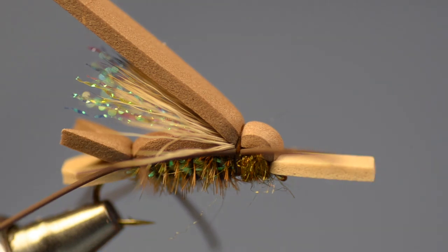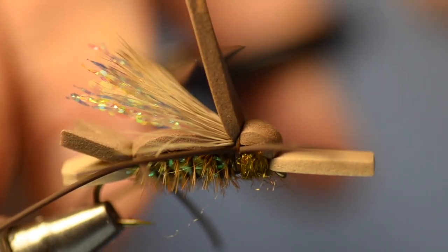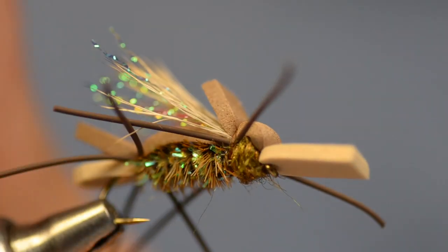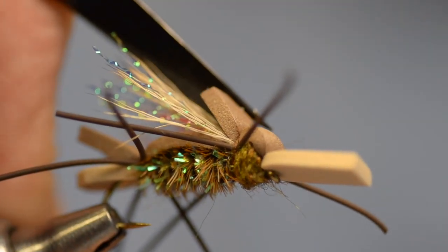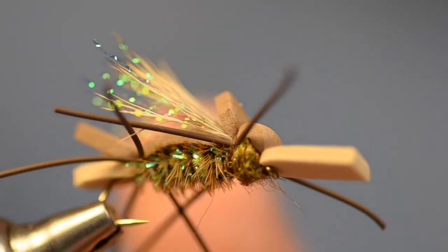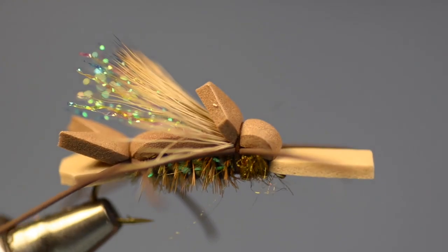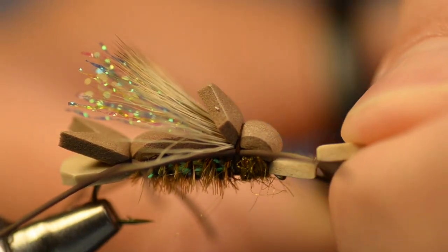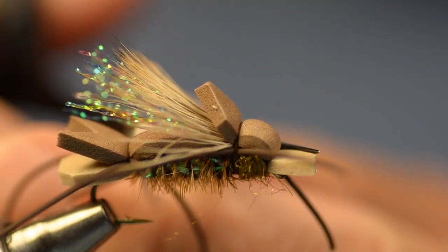I'll clip my thread out. And I find it easiest to trim this long piece of tan foam square across first. But we are going to taper it. So I'll turn my vice a bit. And I'm going to cut that to a point. And our front end of the tan foam, I'm going to cut just a little bit beyond the hook eye. And again, I'll just come in and knock the corners off.